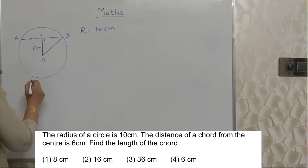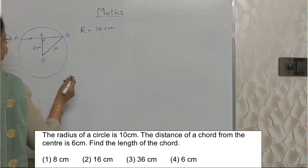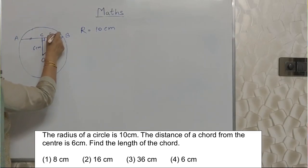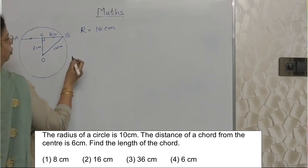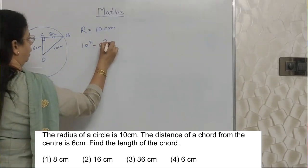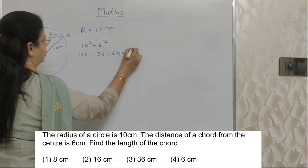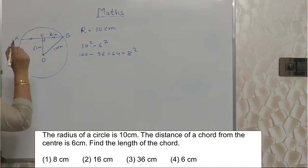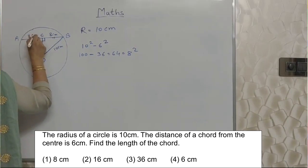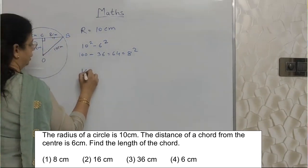So this is a right angle triangle, and the radius OB is 10. Many students know the triplets, so from 6 and 10 they will immediately know this is going to be 8 cm. But in case you don't know, use the Pythagoras theorem: 10 squared minus 6 squared equals 100 minus 36 equals 64, which is 8 squared. So CB is 8. Once we know CB, AC is also going to be the same. So the length of the chord is 8 plus 8 equals 16 cm.